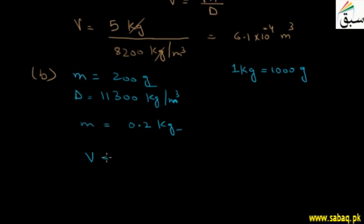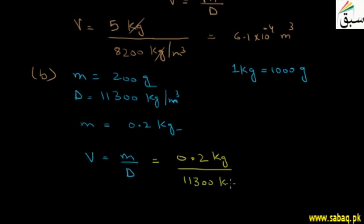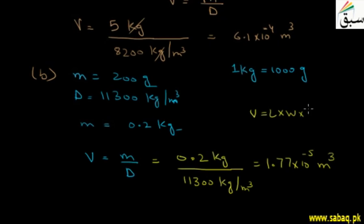Using the formula volume equals mass divided by density, we put 0.2 kg divided by 11300 kg per m³, and the answer is 1.77 × 10⁻⁵ m³. The unit is m³ because volume is length × width × height, and each length is in meters, so meter × meter × meter equals meter cubed.